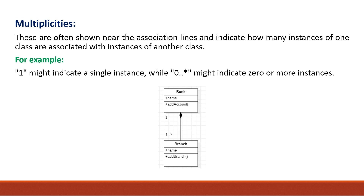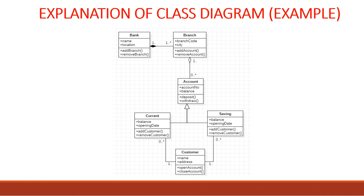Next there is a multiplicity relationship. Multiplicity tells in what number one class can interact with another class. For example, as shown in the diagram, one bank has one or more than one branches. Similarly, one bank can have zero or more accounts in it. This relationship is called a multiplicity relationship.